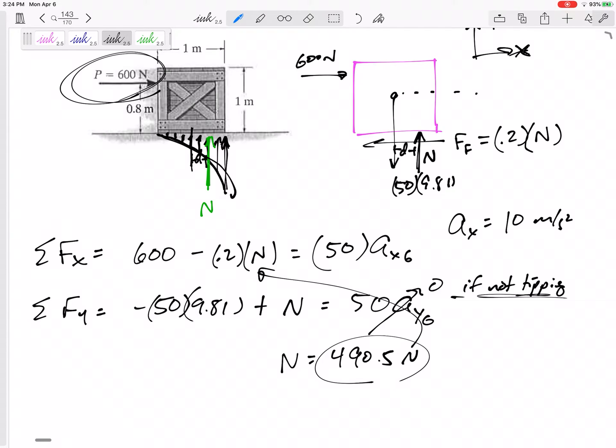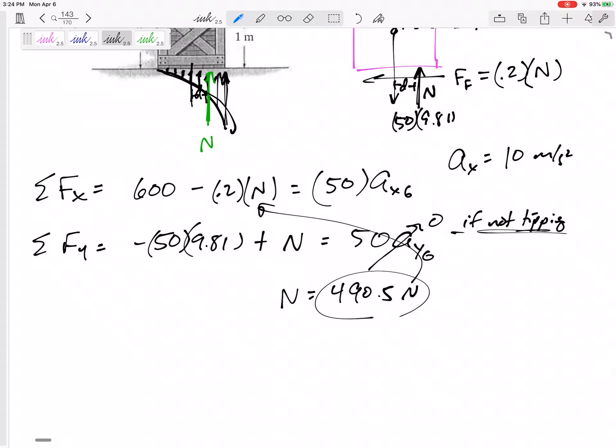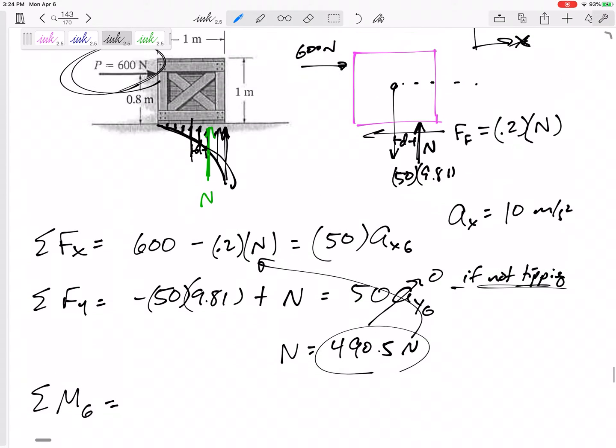But I made an assumption there. I need to state whether that's true or not. Whether I can really assume that or not. And I haven't sum my moments. Let me sum my moments. Let me sum the moments about g. Summing the moments about g. The weight goes straight through g. We can always put the weight straight down from the center of gravity, even though it really is distributed over the whole box. We can replace it at the center of gravity.